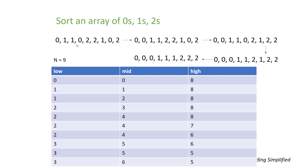We will use three pointer variables: low, mid, and high. Low represents the boundary for 0s — it always points to the next index where a 0 should be placed. Mid is our current iterator, starting at 0. High represents the boundary for 2s, always starting at index n-1. Whenever we find a 0 at mid, we swap it with low. Whenever we find a 2 at mid, we swap it with high.